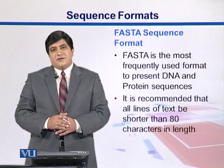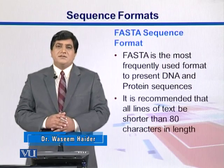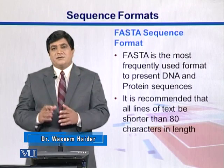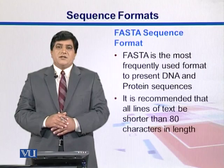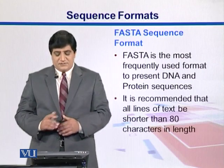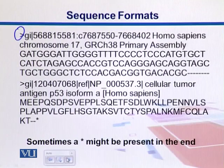FASTA is the most recognized and widely distributed format. In FASTA, sequences are preceded by a greater-than sign, and below it is the actual sequence. The length of each line should be less than 80 characters — generally around 60. Here is the FASTA format coming from DNA; at the top we see it starts with this greater-than sign. Below is the protein sequence. GI stands for gene identification.